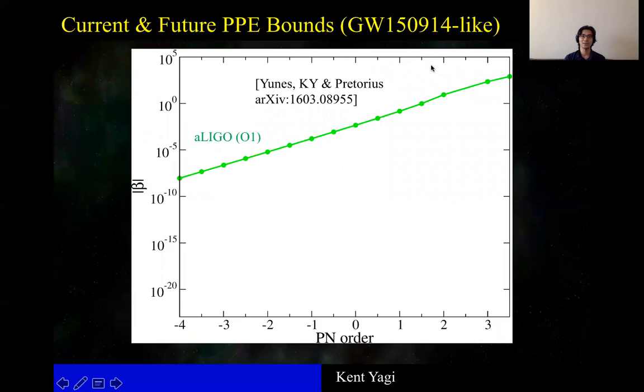or an event that's equivalent to this one. The green dashed curve corresponds to the upper bound on beta using this event, using advanced LIGO O1 noise curve.